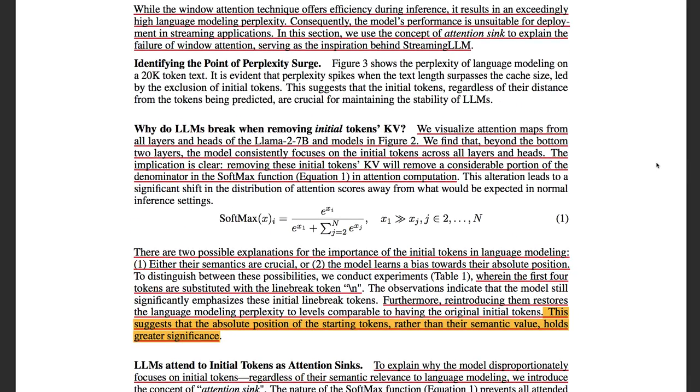So there are two potential explanations of why the initial token helps with the model. One is they are semantically very important because they're the beginning of the sentence. The other potential reason is that the model learns a bias towards their absolute position.